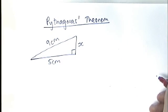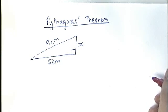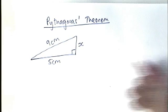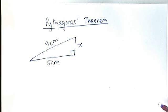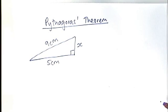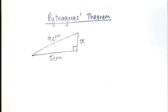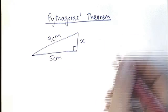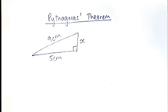This video is designed to help you decide, when you're doing Pythagoras' theorem, whether you're going to add the squared numbers or whether you're going to subtract those numbers. Here I have an example of a right-angled triangle. We're asked to work out the value of x — the length of one of the sides. There are two ways of doing this: thinking about squares on the sides, or doing it algebraically using the formula a² + b² = c².